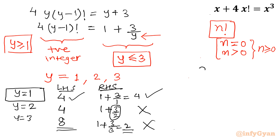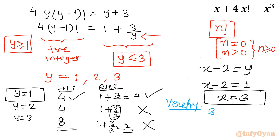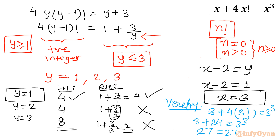Since our substitution was x−2 = y, putting y=1 gives x−2 = 1, so x = 3. Let's verify: (3+4)·3! should equal 3³. We get 3+4 = 7, and... actually 3! = 6, so 4·3! = 24, giving 3 + 24 = 27, and 3³ = 27. Hence verified — x = 3 is the correct solution.